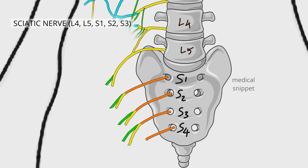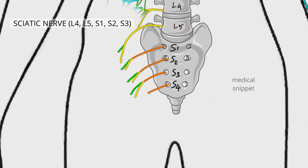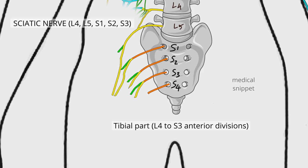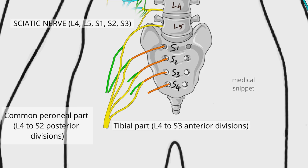The sciatic nerve is the largest branch of the sacral plexus, and it is the largest nerve in the human body. It has two parts: the tibial part, which is formed by the anterior divisions of the ventral ramus of L4, L5, S1, S2, and S3; and the common peroneal part, which is formed by the posterior divisions of the ventral ramus of L4 to S2.